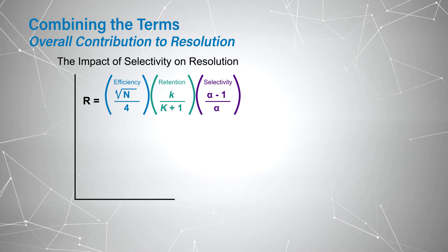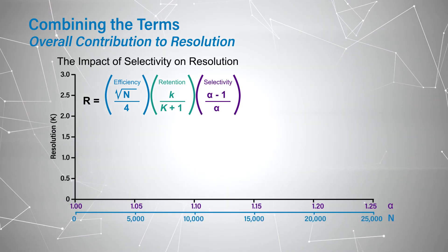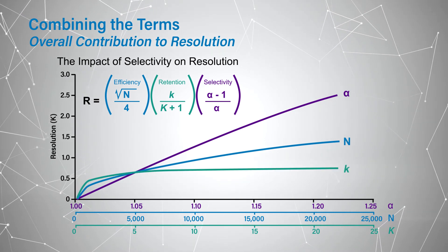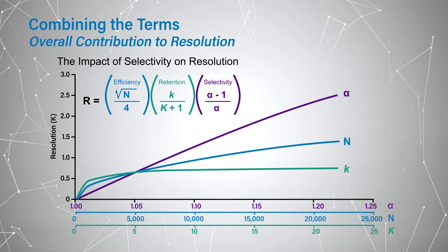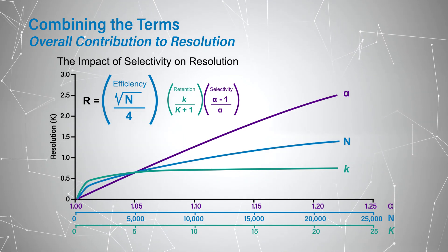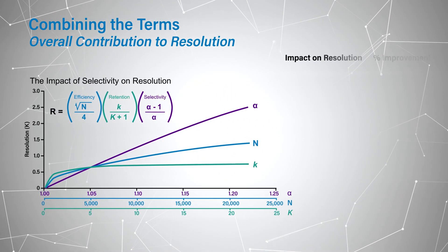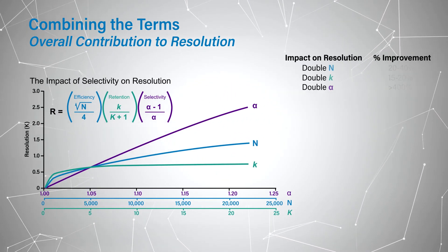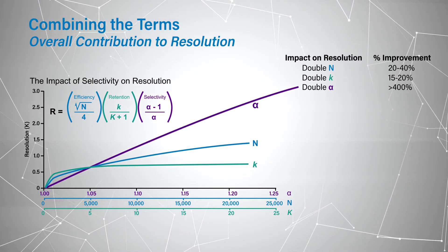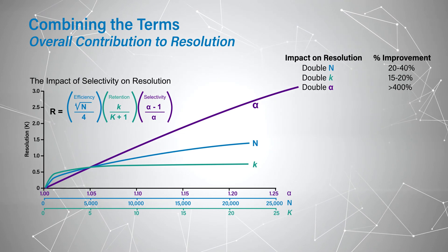This is really why separation scientists do chromatography — they're trying to pull things apart. And the fundamental resolution equation shows the three main components that drive resolution: efficiency, retention, and selectivity. As you can see from the graph, it's all about the selectivity. If you can get more selectivity in a separation, the more likely you are to drive resolution.